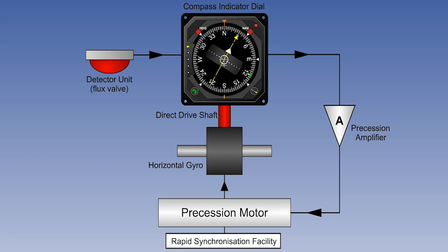We showed the basic components which make up the system. We said that the purpose of the detector unit, or flux valve, is to sense the Earth's magnetic field and reproduce it within the compass indicator.